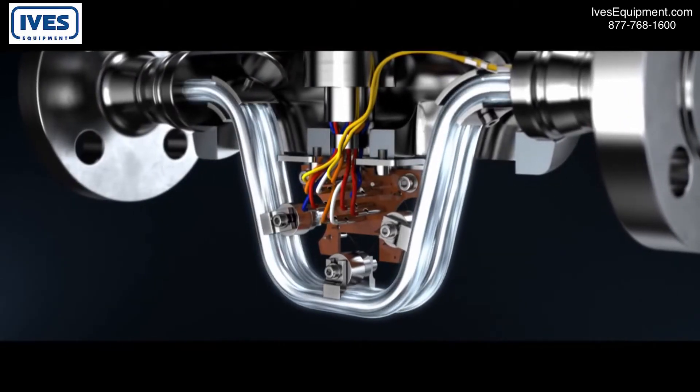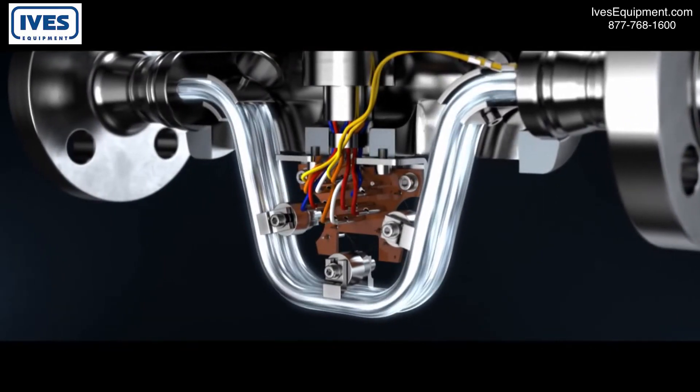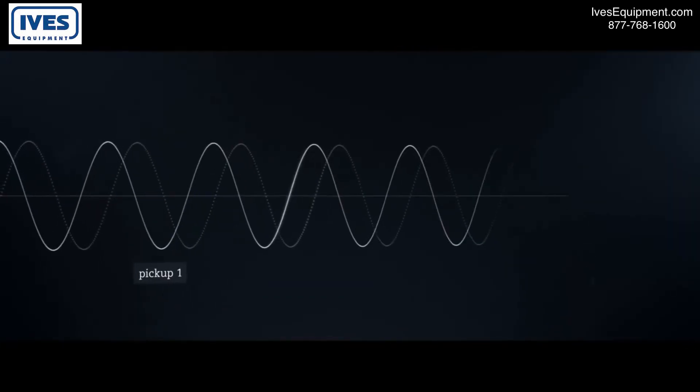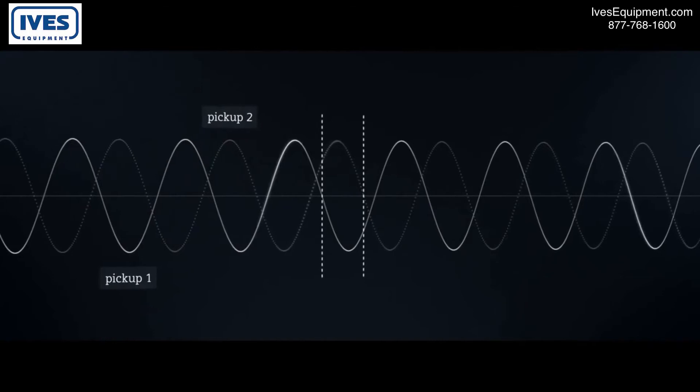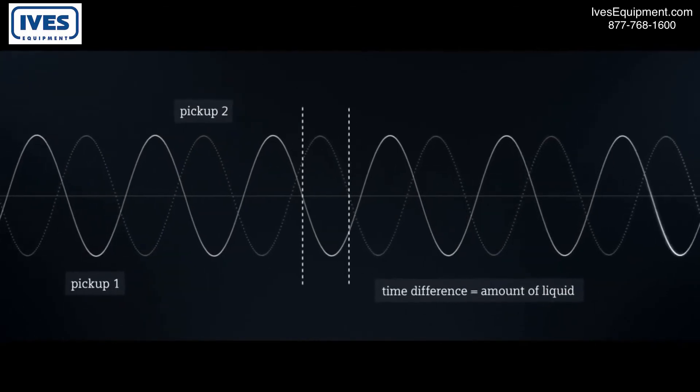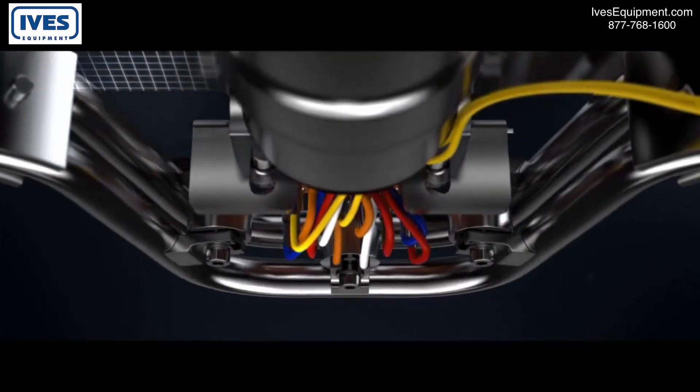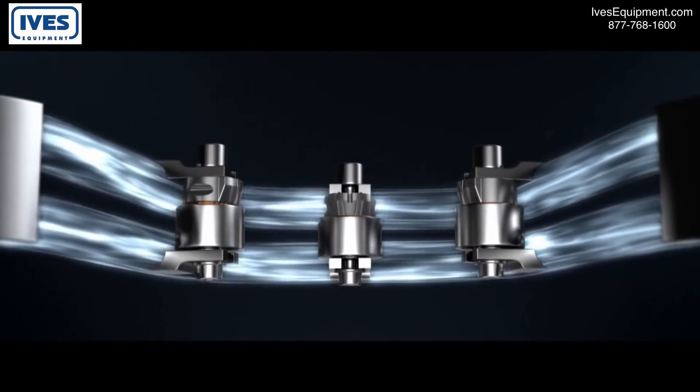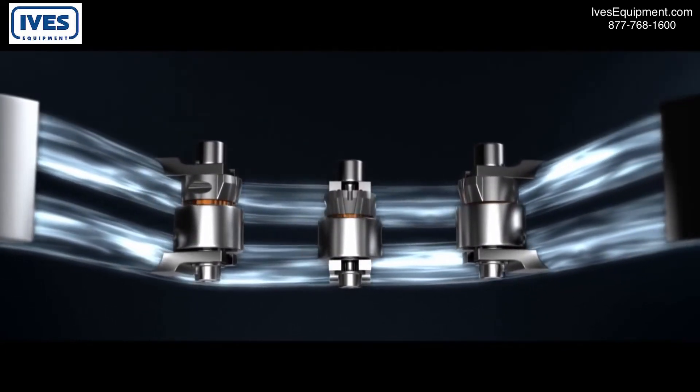If liquids or gases now flow through the tubes, a phase shift occurs, as with a water hose. The pickups measure the spatial and temporal displacement. This determines the amount of liquid or gas flowing through the tubes. The greater the amount, the stronger the tubes oscillate outwards.